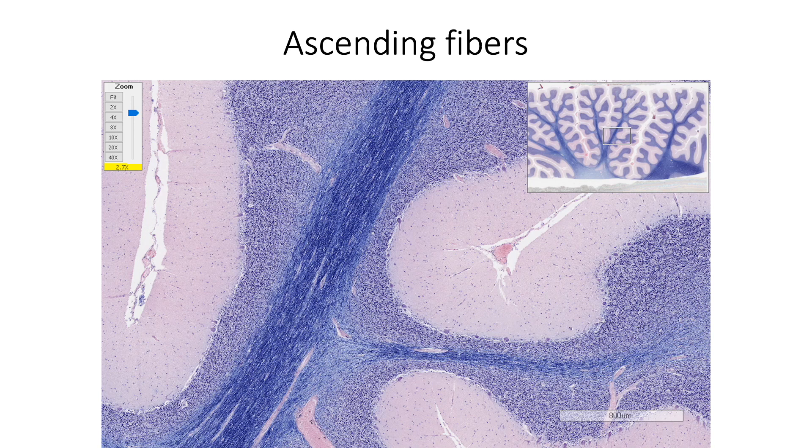Which climb straight to the molecular layer and these fibers are the afferents coming from contralateral inferior olivary nuclear complex found in the medulla oblongata. Each climbing fiber gives a few branches and each branch synapses with dendrites of a single Purkinje cell. Thus, a single climbing fiber activates a microzone of few Purkinje cells.